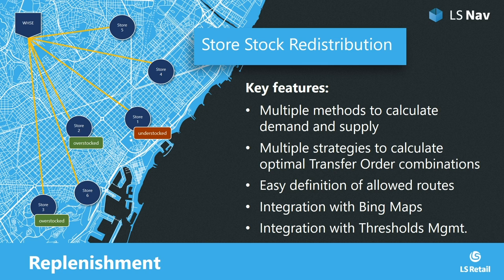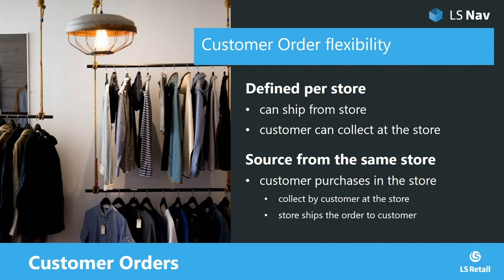With store stock redistribution, the retailer can redistribute stock from overstocked stores to understocked stores. This improves sales performance, improves service quality, and it is easy to maintain the appropriate stock levels in the stores. Now we can define which store can either ship an order or have it collected by the customer. If a customer purchases an item in an out-of-stock store, they can collect it at a later date or have it shipped.